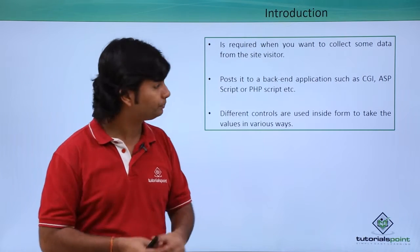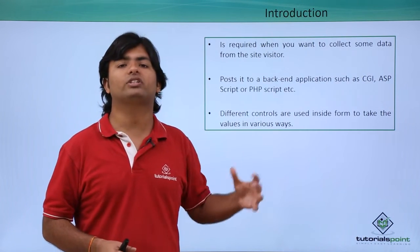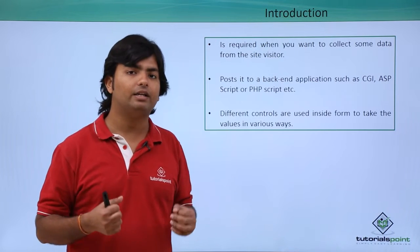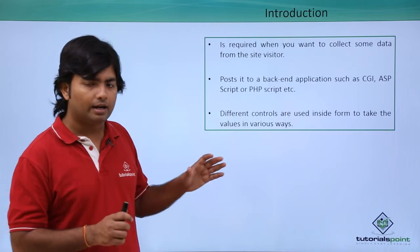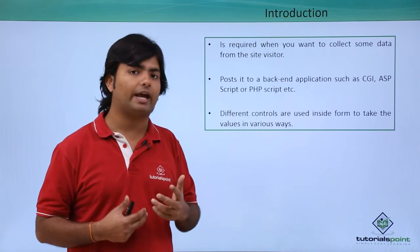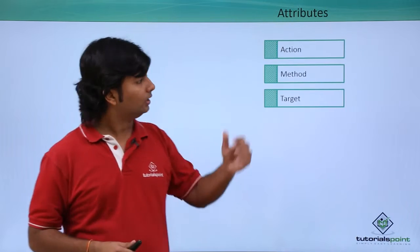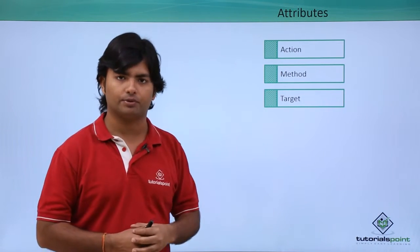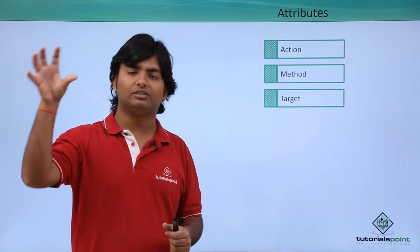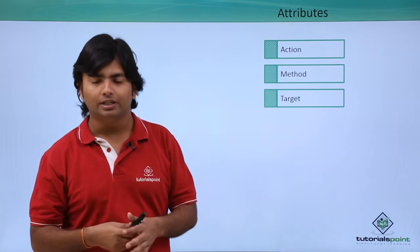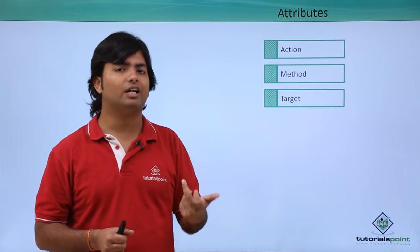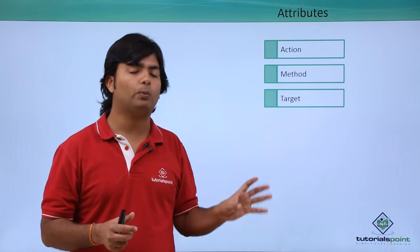Different controls are used inside a form depending on which kind of data you are going to take from the user. When you put the form tag there are some important attributes you must know about. The first attribute is the action attribute - action is basically the location of the confirmation page. When you click the submit button, this action page tells the user that the form has been submitted successfully. Here you can give the URL of any confirmation page that will appear in the browser as soon as your form is submitted.